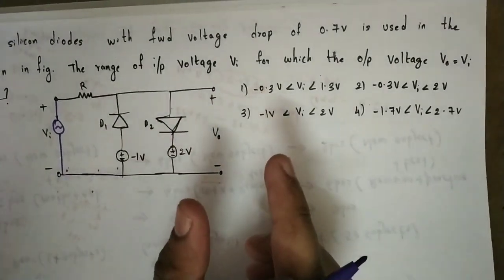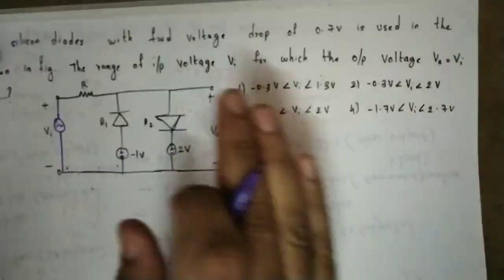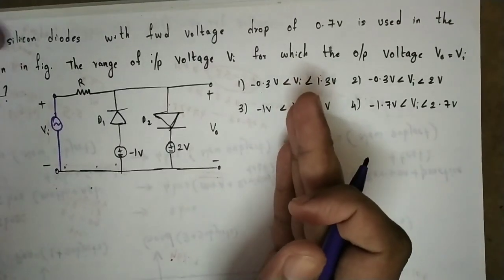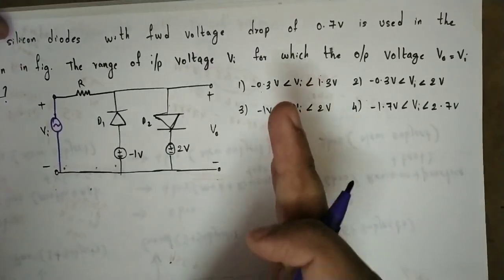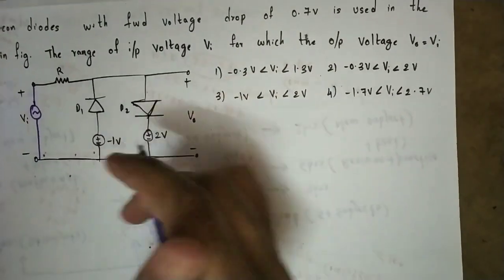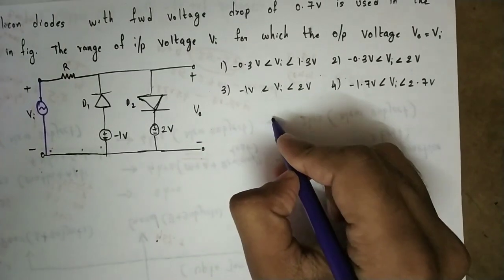Let's look at one key point. If you have practical diodes, you can always convert them into ideal diodes — that is the best approach.